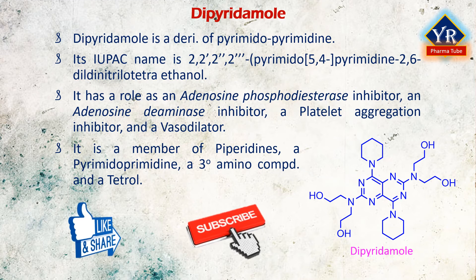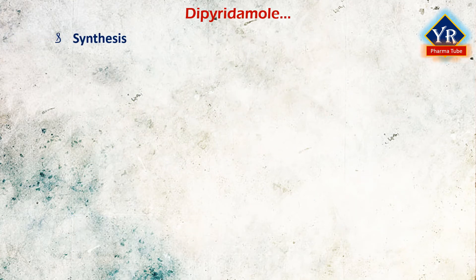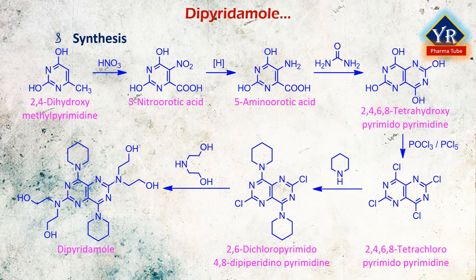Dipyridamol is a nucleoside transport inhibitor and a PDE3 inhibitor medication that inhibits blood clot formation when given chronically, and causes blood vessel dilation when given at high doses over a short time. Dipyridamol is easily synthesized from 5-nitroorotic acid, which is prepared from 2,4-dihydroxymethylpyrimidine, which in turn is usually prepared by the condensation of urea with acetoacetic ether.